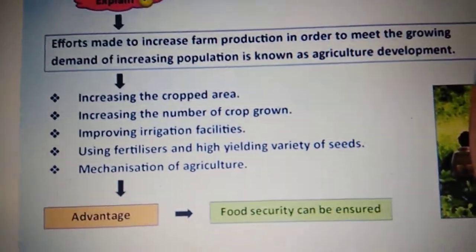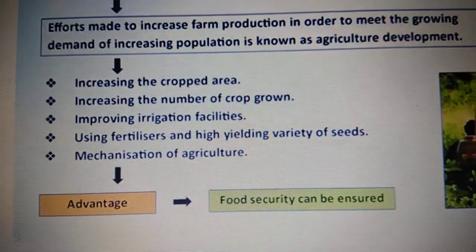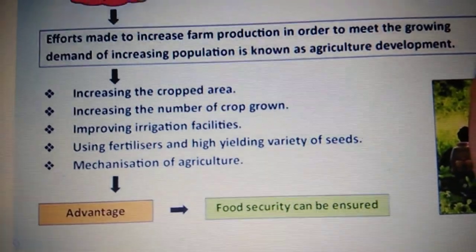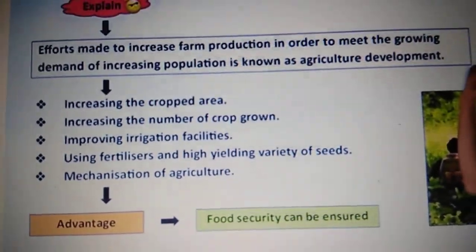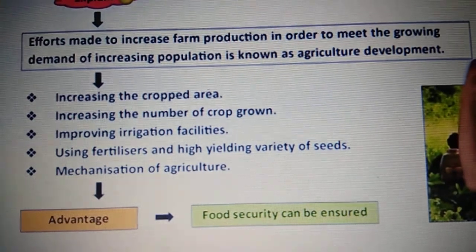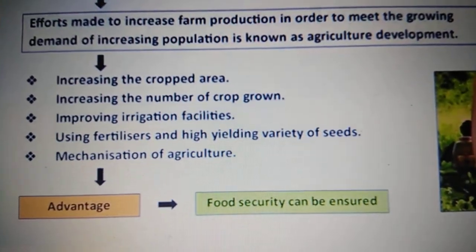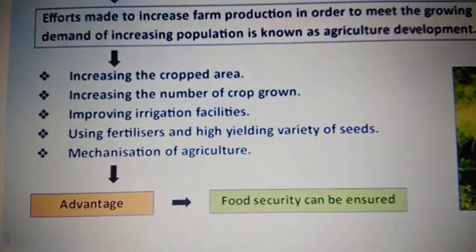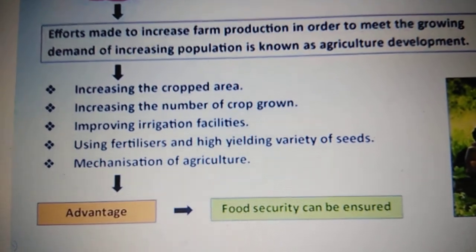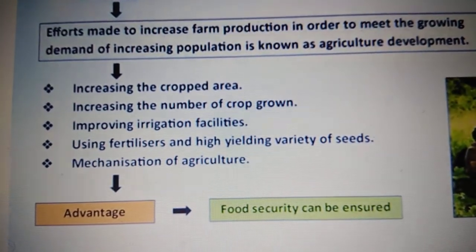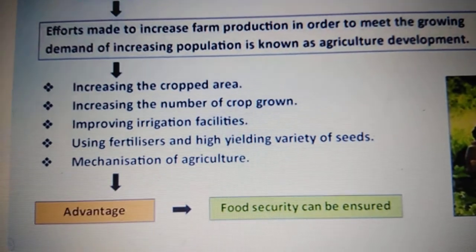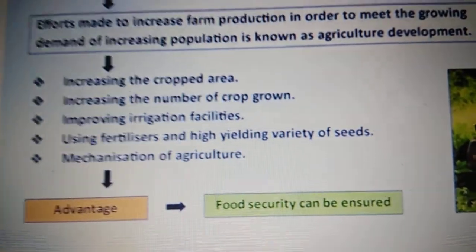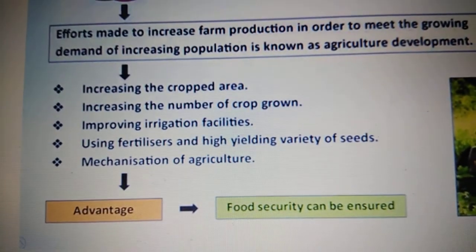How can we do it? Here are some suggestions. First, increase the cropped area — we have more area where we can grow crops instead of having concrete buildings coming up. Second, increase the number of crops grown — not only one crop in one field, we can grow two or three crops in the same field. We can do this by improving irrigation facilities, using fertilizers, and using high-yielding variety seeds, also called HYV seeds, where one stem can produce lots of fruits and grains.